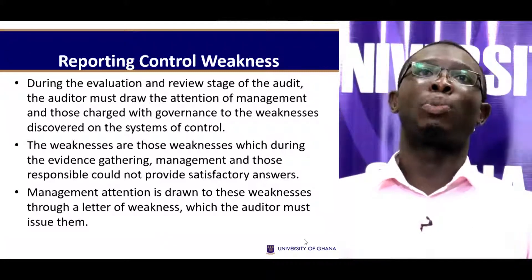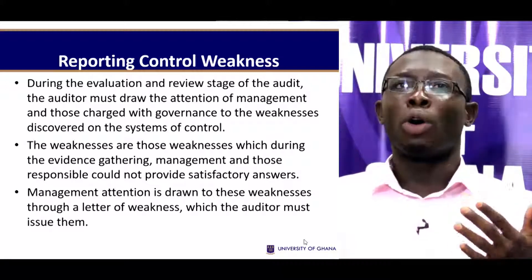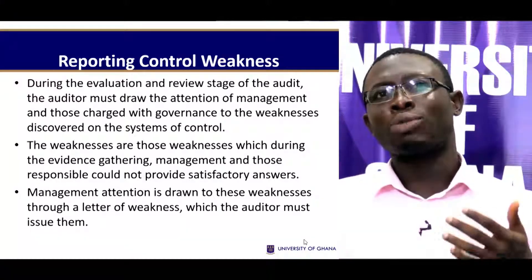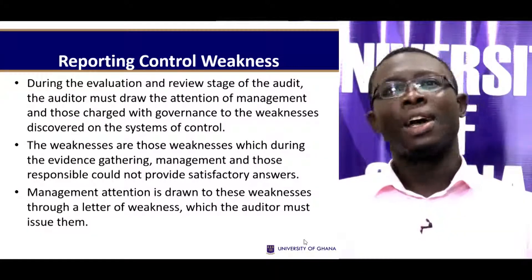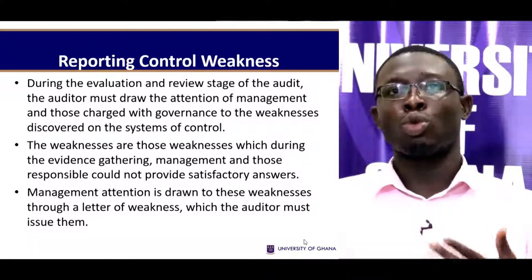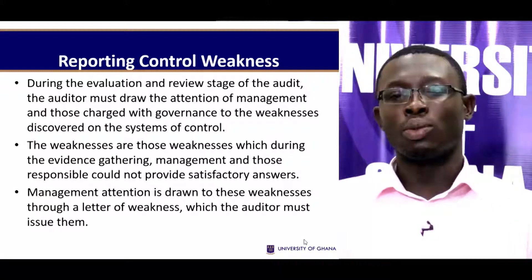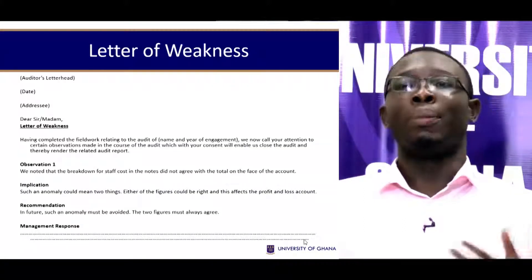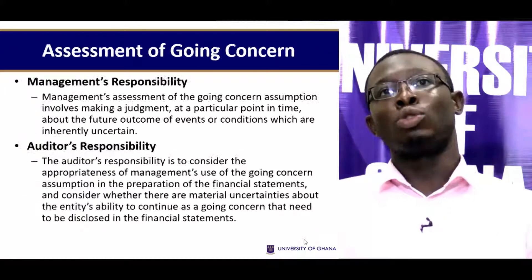Let's look now at reporting control weaknesses. During the evaluation and review stage of the audit, the auditor must draw the attention of management and those charged with governance to weaknesses discovered in the systems of control. These are weaknesses where, during evidence gathering, management and those responsible could not provide satisfactory answers. Management's attention is drawn to these weaknesses through a letter of weakness, which the auditor must issue to them. This is an example of a letter of weakness — take note and read more to appreciate it.